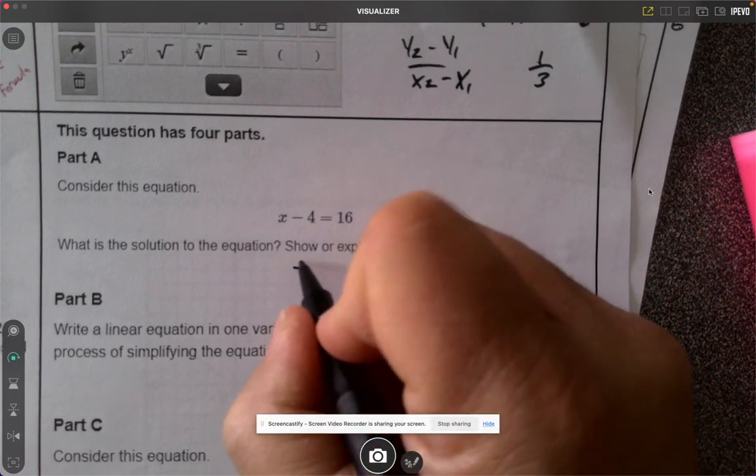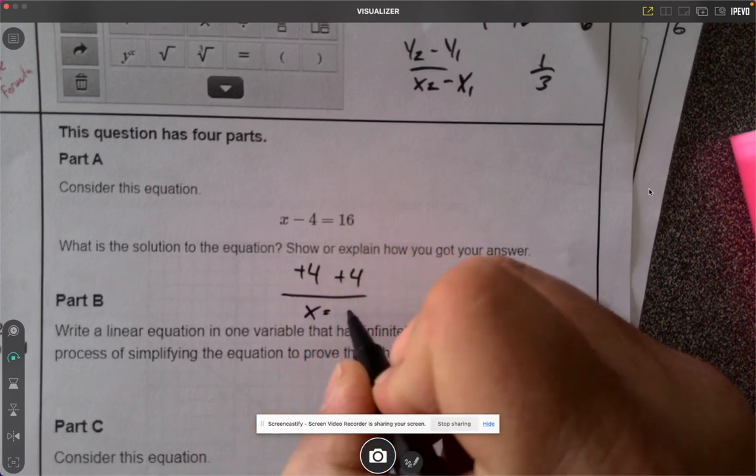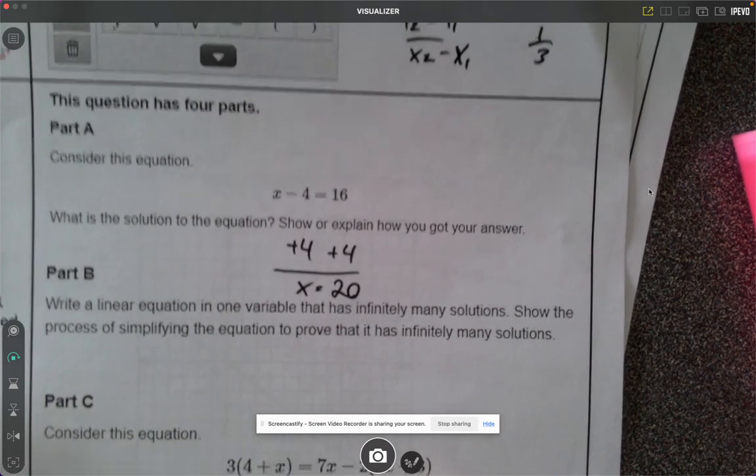All right, let's solve this equation. Too easy. Add 4 to both sides, add 4 to both sides. x equals 20. Too easy. I can't even make a mistake there, it's too easy.